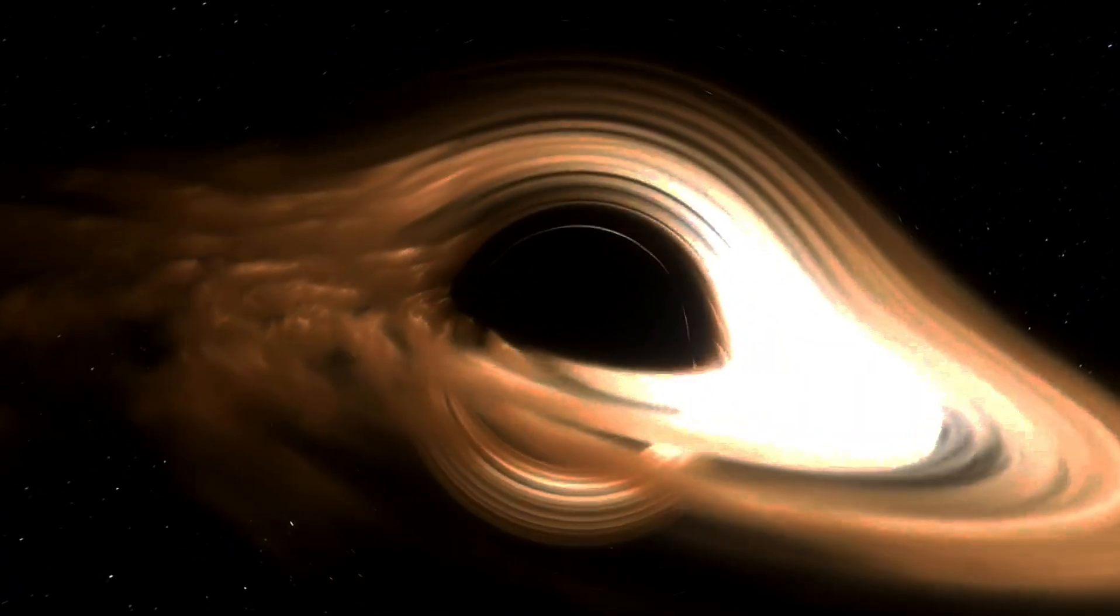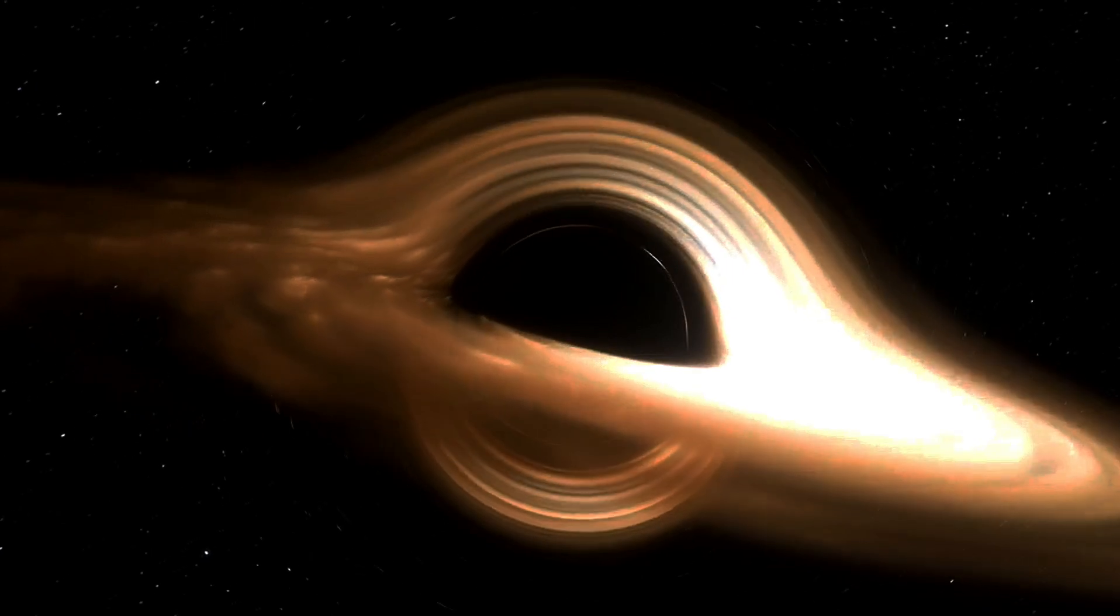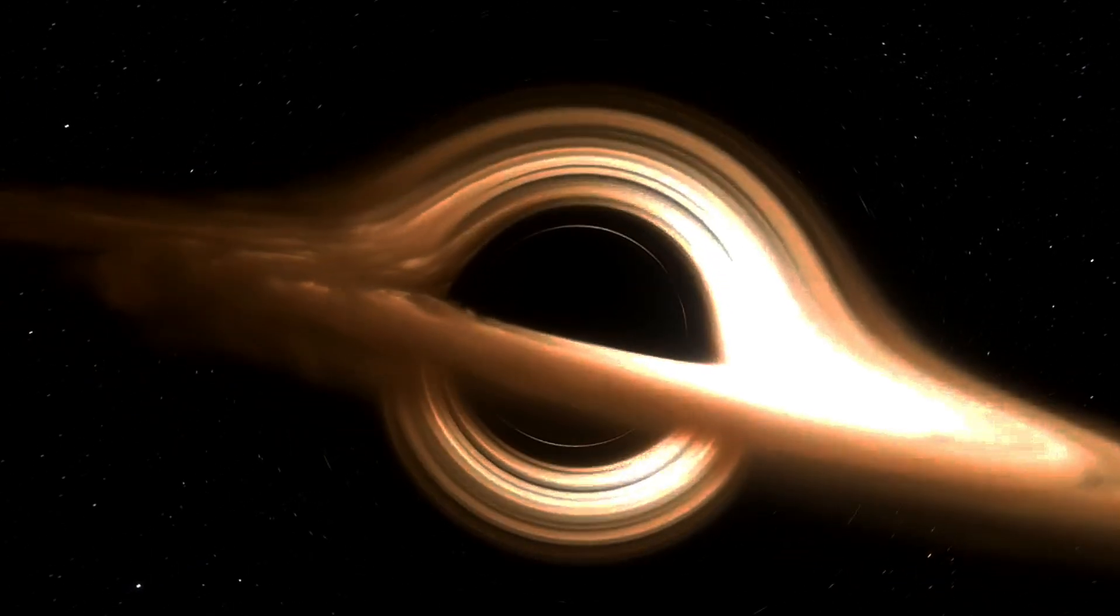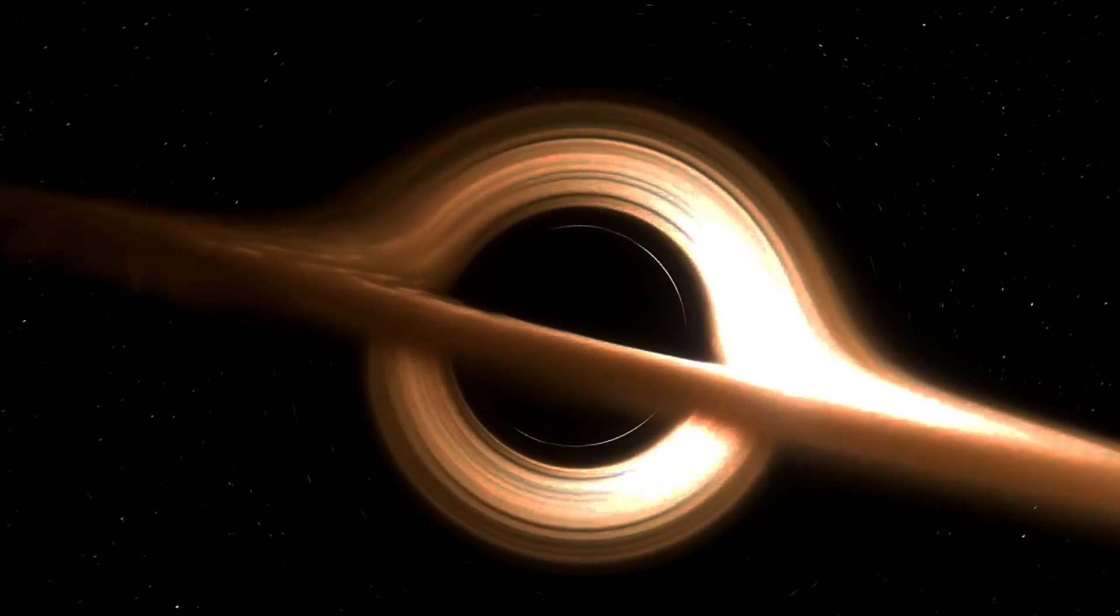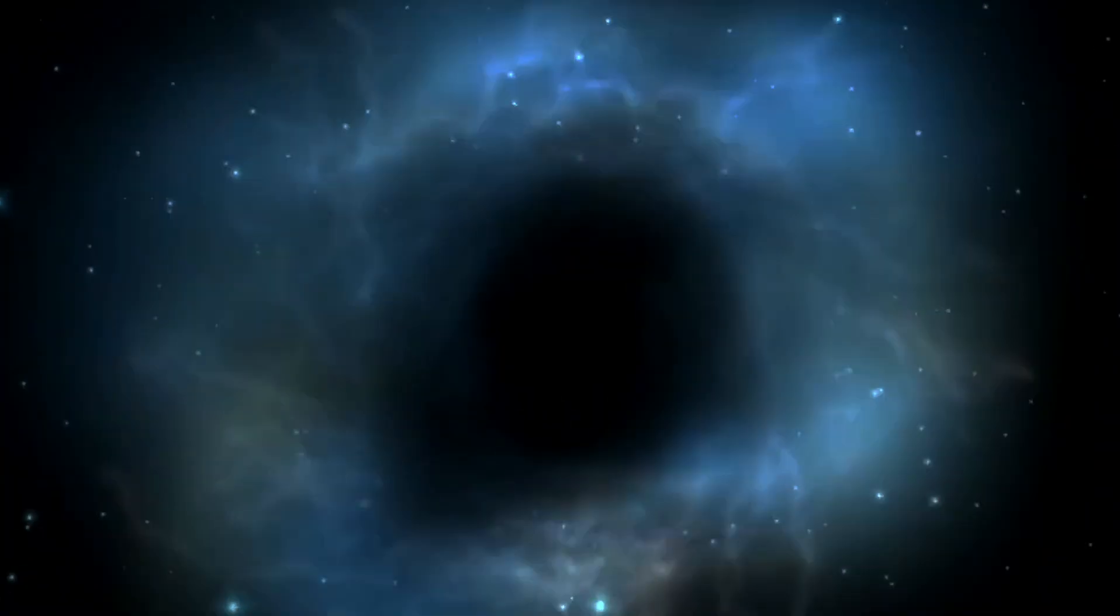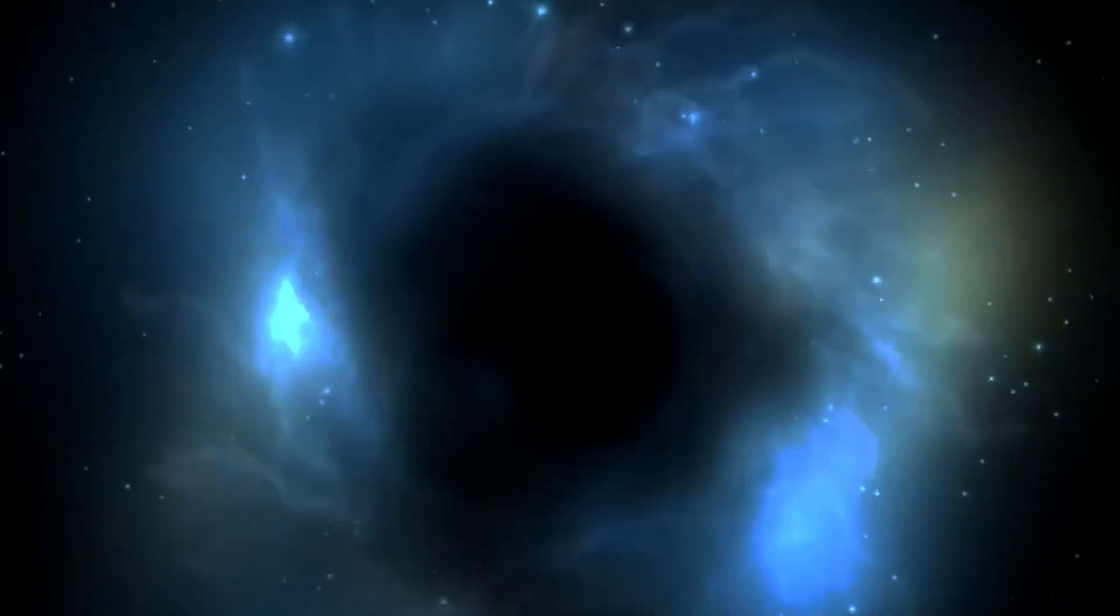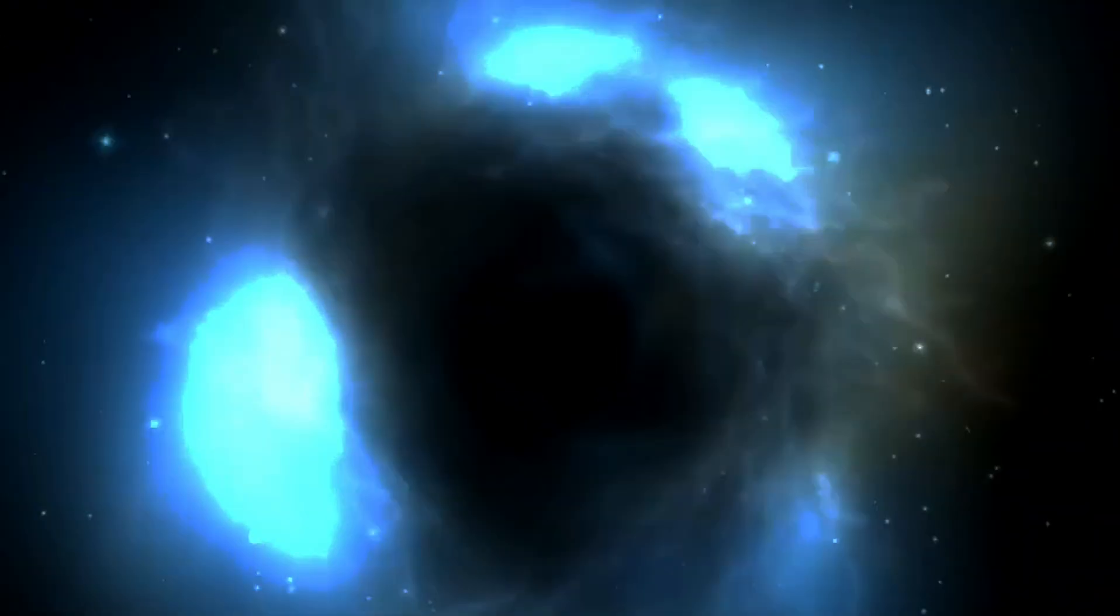And yet, inside of a black hole, the math of general relativity is very clear. All of that matter and energy that goes into forming it, no matter how it's initially configured, is going to wind up collapsed down to either a single, zero-dimensional point if there's no net angular momentum, or stretched out into an infinitely thin one-dimensional ring if there is spin or angular momentum present.